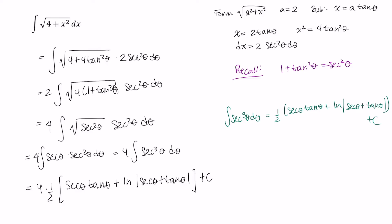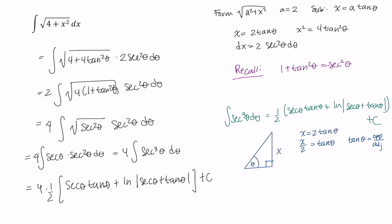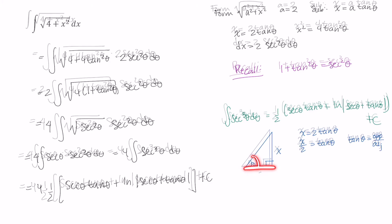So let's use the information we have and write triangle trigonometry to back-substitute. Let me draw a right triangle here, where this angle is theta. We can figure out what theta is because we said x equals 2 tangent of theta, which tells me that x over 2 equals tangent of theta. Recall that tangent theta equals opposite over adjacent, so the side opposite to theta is x, and the side adjacent to theta is 2.